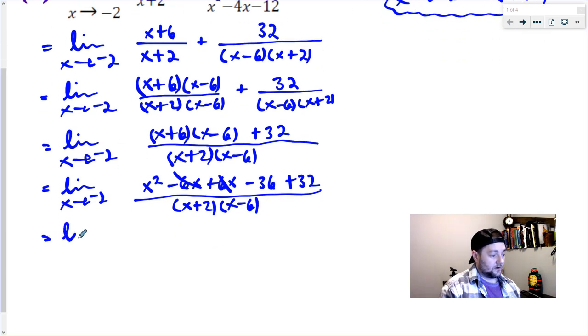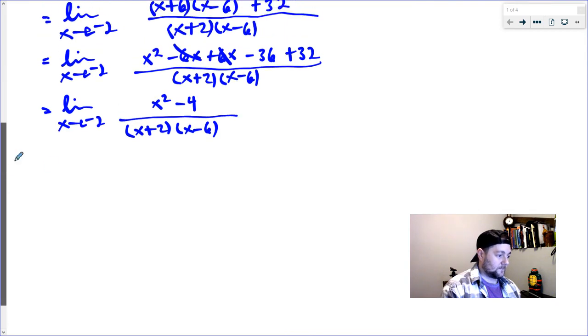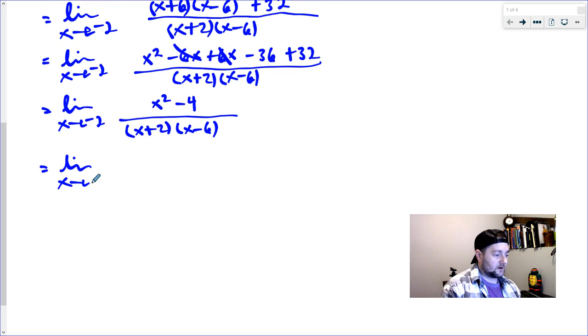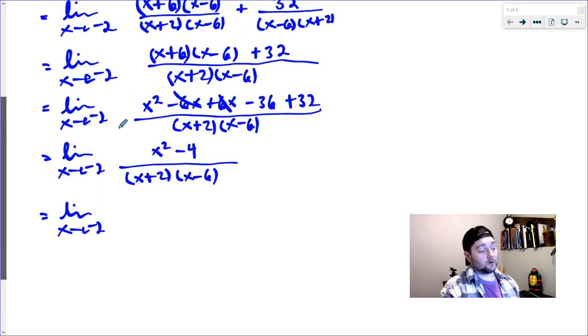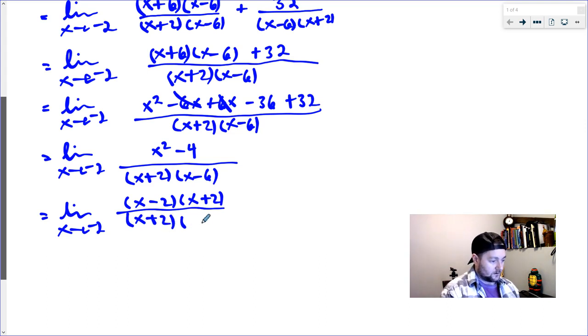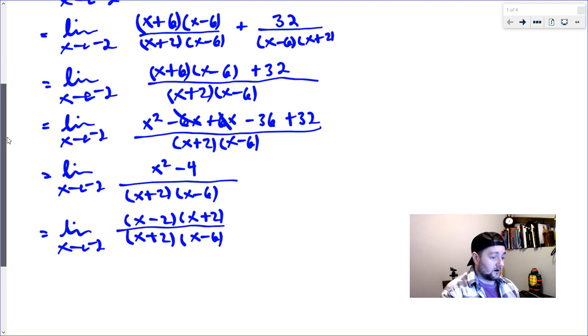So then I get left with limit as x goes to negative two. And then I've got 36 plus 32, which is minus four. So I get x squared minus four, all divided by x plus two, x minus six. And then I'm going to do a little factoring technique which I love called difference of squares. Difference of squares occurs when you have a square term minus another square term. So four is a perfect square, so is x squared. So we can write them as x minus two, x plus four. So that factoring technique is called difference of squares.